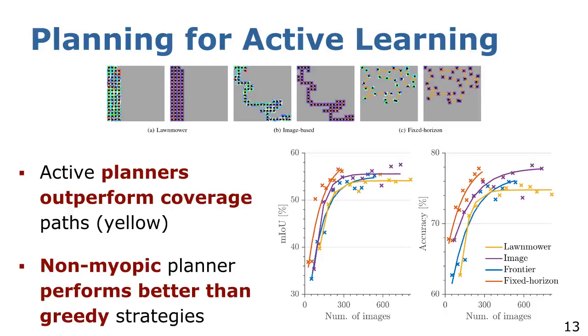To evaluate the behavior and performance of our proposed planning framework, qualitatively, the planned paths confirm the adaptive behavior of our approaches targeting regions of high model uncertainty. Quantitatively, better active learning performance is reflected by maximizing accuracy and mean IOU with fewer acquired labeled images. As indicated by steeper rising curves, our proposed fixed horizon and image-based strategies, in orange and purple respectively, clearly outperform a classical coverage-based baseline in yellow, since they allow active decision-making for data collection.